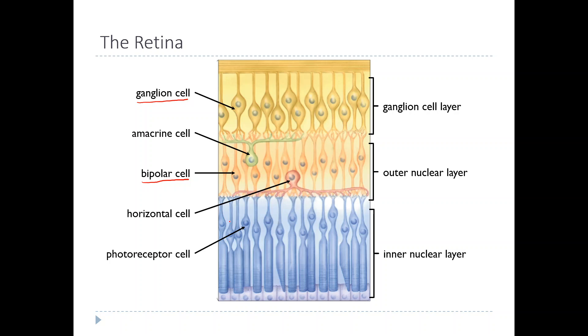And then the inner nuclear layer consists of the photoreceptor cells. These are the cells that actually detect light and convert it into an action potential. Inside the outer nuclear layer there are two other kinds of cells - amacrine cells and horizontal cells. They're important for processing within the retina.